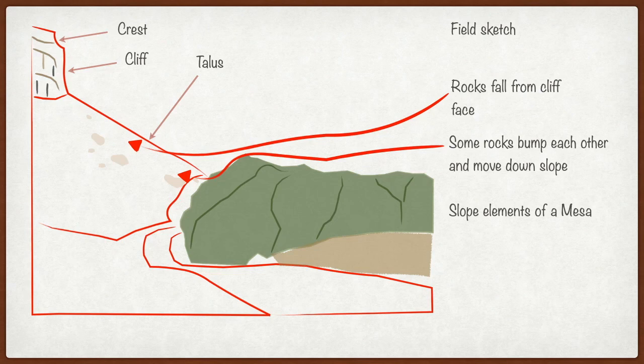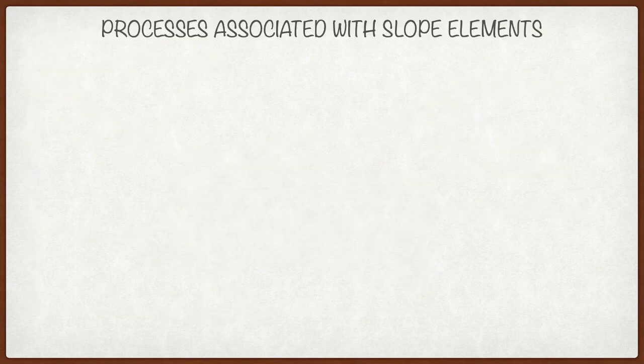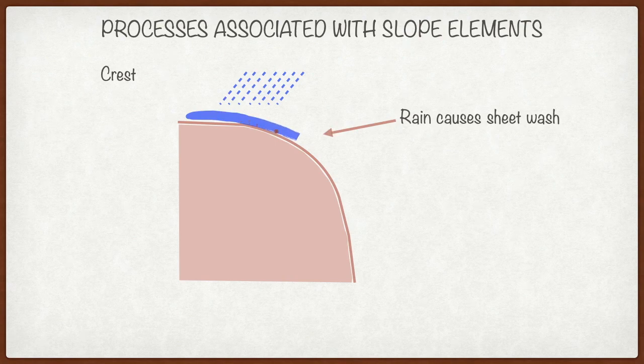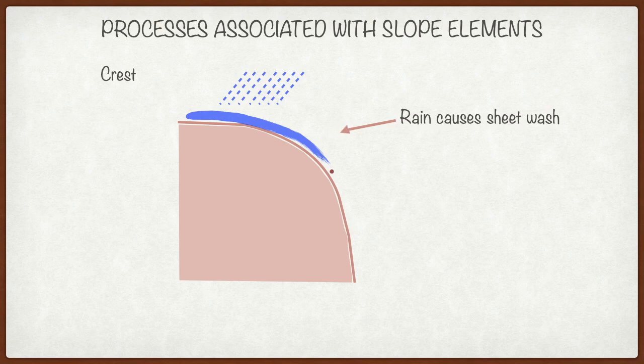Now let's look at each of these slopes individually. Let's start off with the crest. The crest has got a convex shape, so it's a rounded shape. If we get any rainfall or sheet wash that occurs along it, notice how in the animation the particles are moved. Because it's got that convex shape, it creates a rounded feature like that.